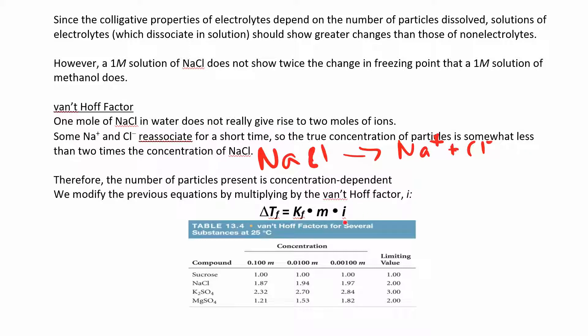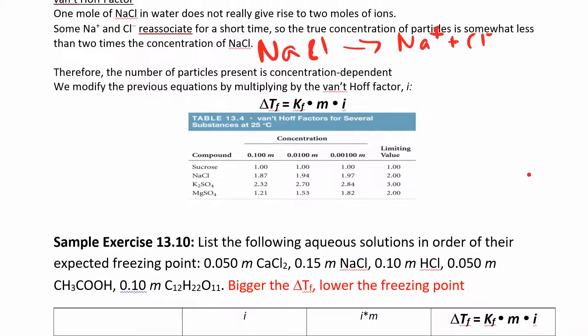So we're going to add something here, this van't Hoff factor onto the end of this equation. And really we're just multiplying it by the moles. So since molality is moles of solute over kilograms of solvent, you're really multiplying the number of moles of particles you have by this van't Hoff factor, which is how many particles it dissociates into.